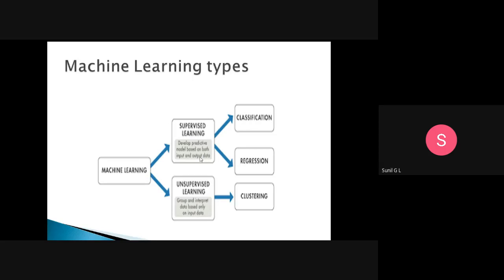This is supervised learning — we know the fruit names, the data is labeled. Based on the labeled data we train the model, and the model predicts. In supervised learning we have two techniques: classification and regression. In classification, we classify things based on yes or no — whether it is a fruit or not. We build a classification tree, also called a decision tree.